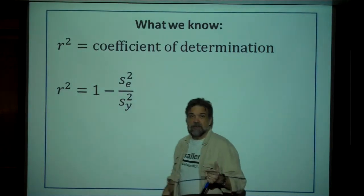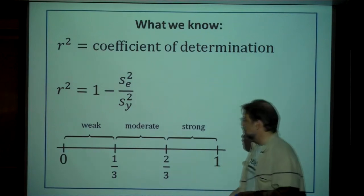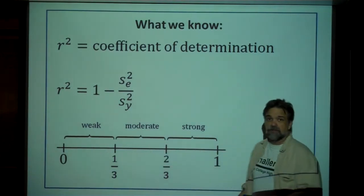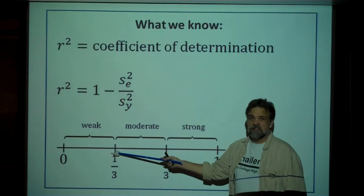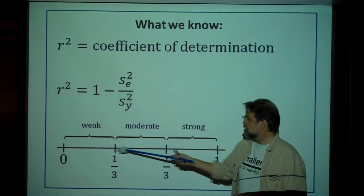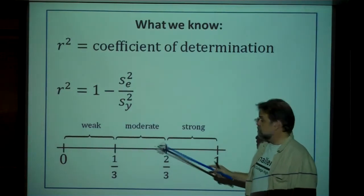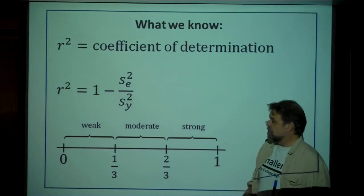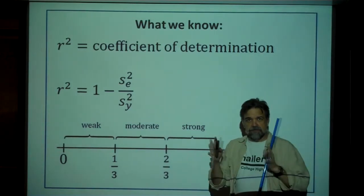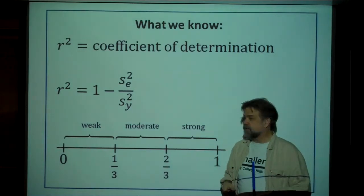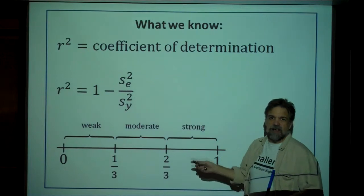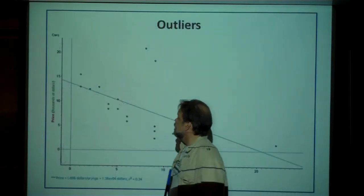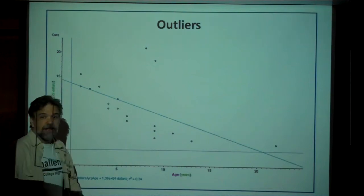A rule of thumb I usually use: cut the interval from zero to one into thirds. The first third is a weak correlation, the middle third is moderate, and the top third is strong. People have various different definitions of weak, moderate, and strong, but I think this is a not-too-bad one.